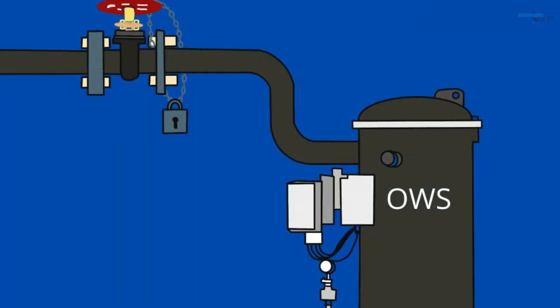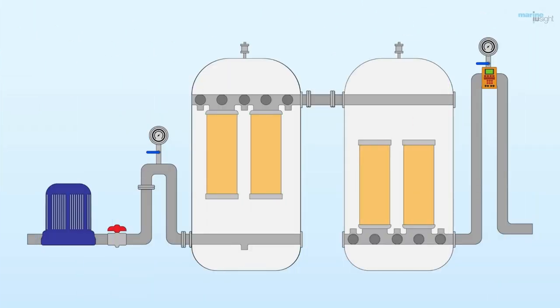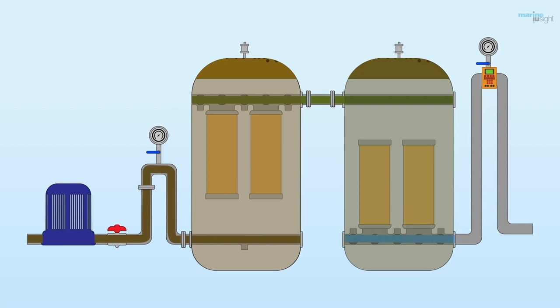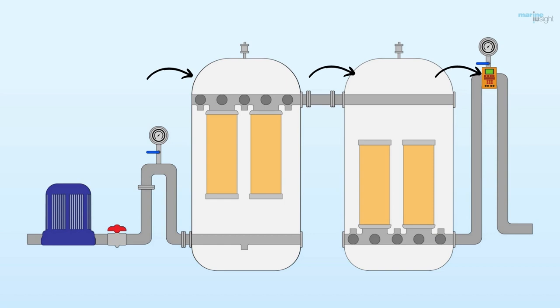The bilge water can be treated in onboard equipment called an Oily Water Separator, or OWS. It filters the water as it passes through different stages of filtration. These stages are designed to separate the oil and water based on their densities. OWS consists of three segments.